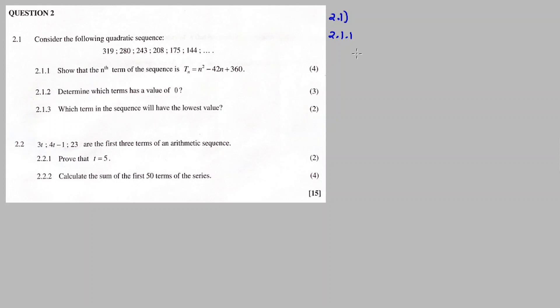So we start by finding the second common difference. We have 319, 282, 243, 208.